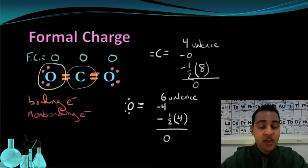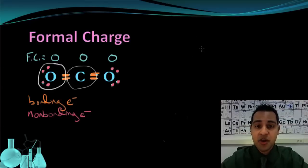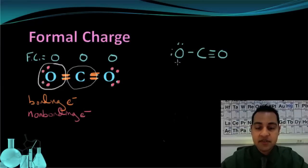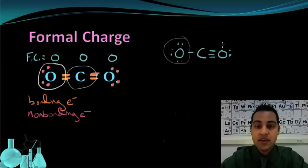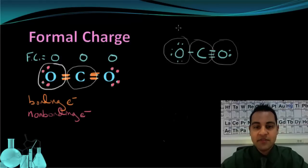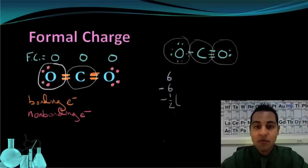Now let's compare this to the other Lewis structure and look at its formal charges. The alternative Lewis structure for carbon dioxide has carbon with a triple bond to one oxygen and a single bond to the other oxygen, with the appropriate lone pairs on each oxygen. Starting with the oxygen on the left — the one with the single bond — we have 6 original valence electrons, minus 6 non-bonding electrons, minus half of 2 bonding electrons, giving us 6 minus 6 minus 1, which equals negative 1.